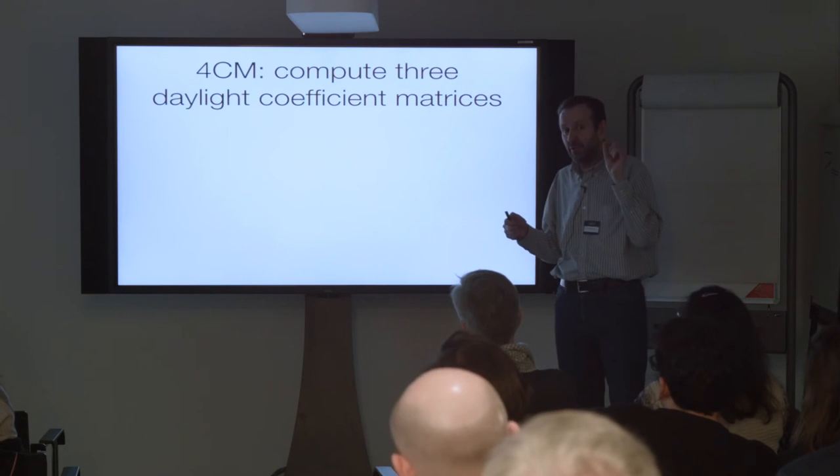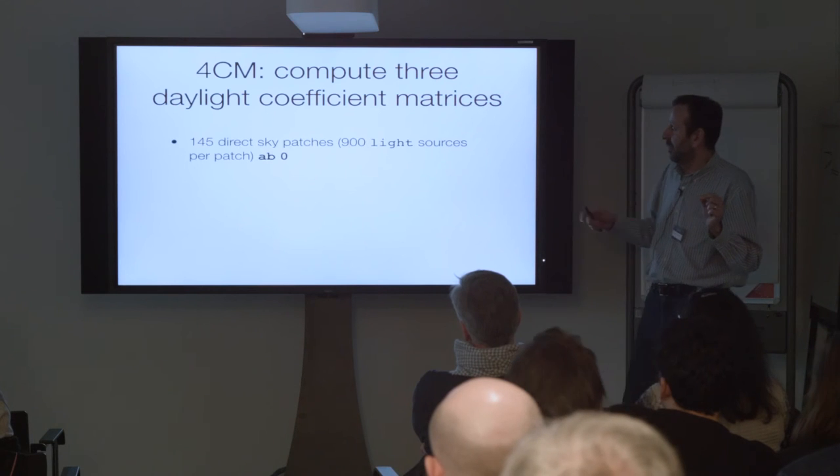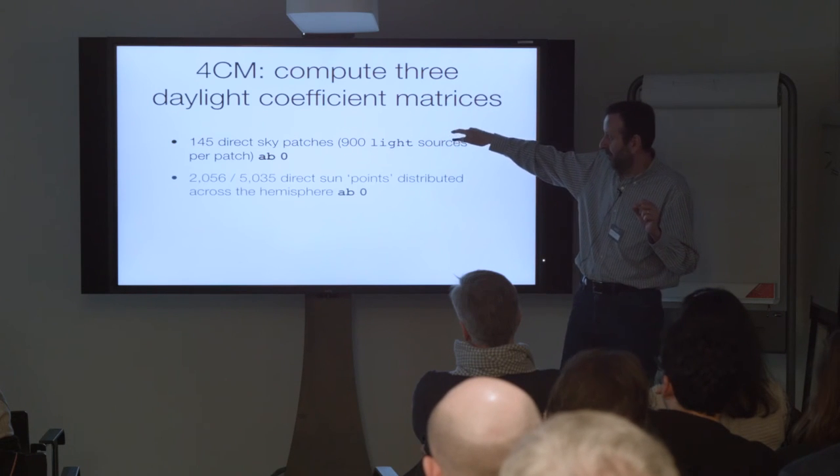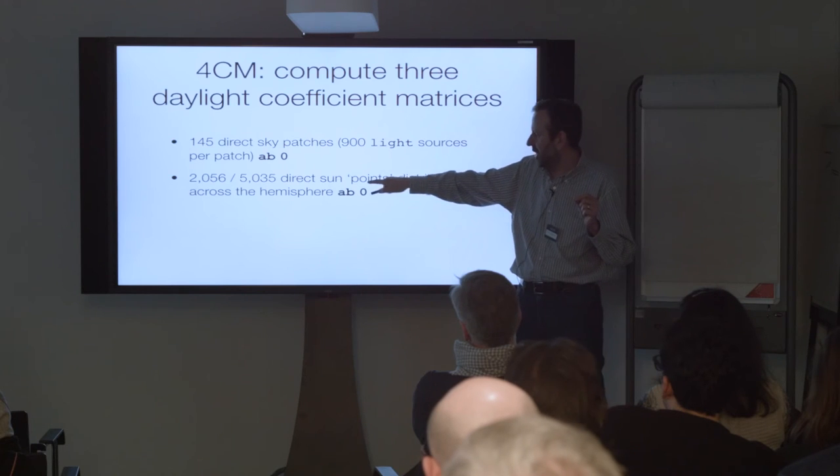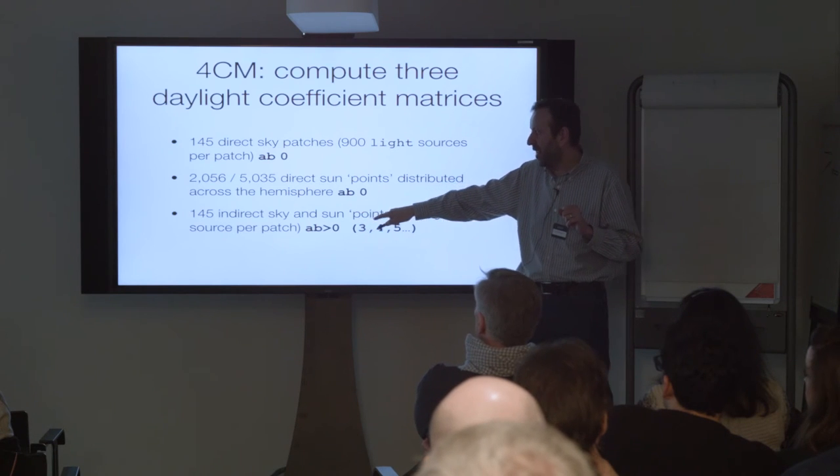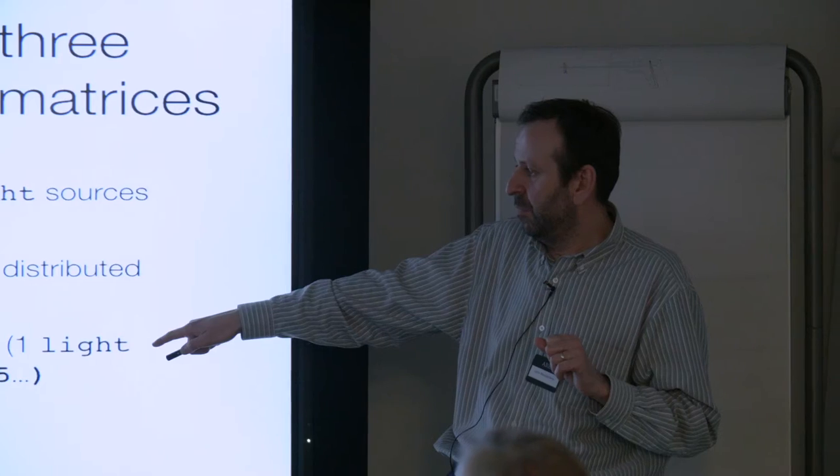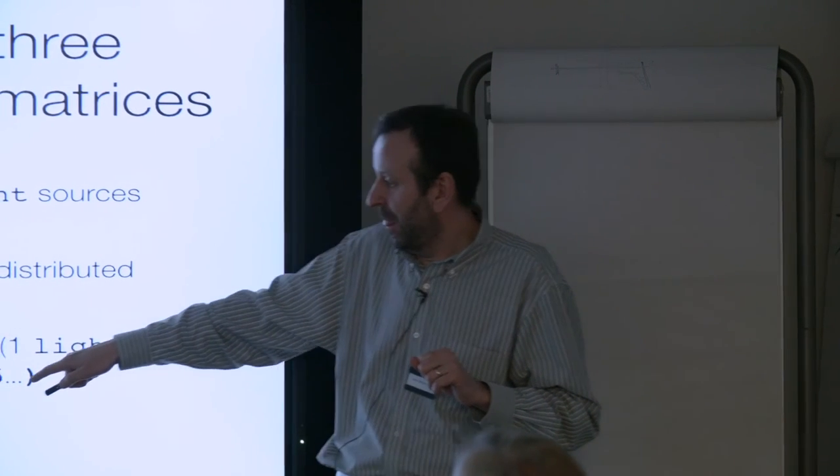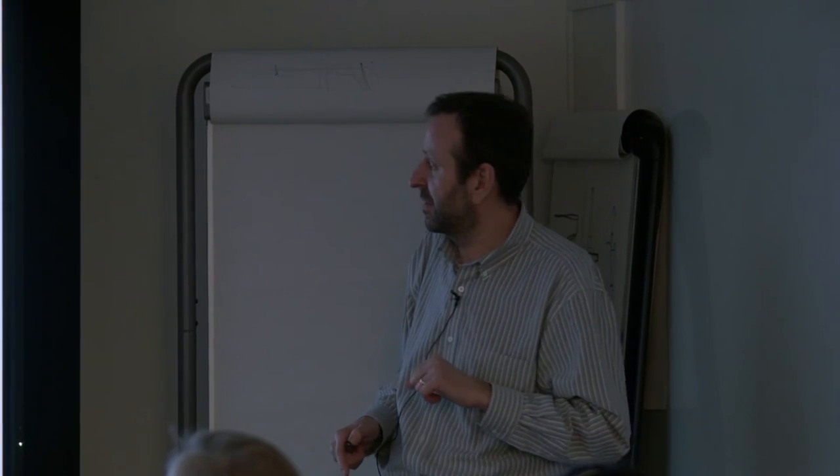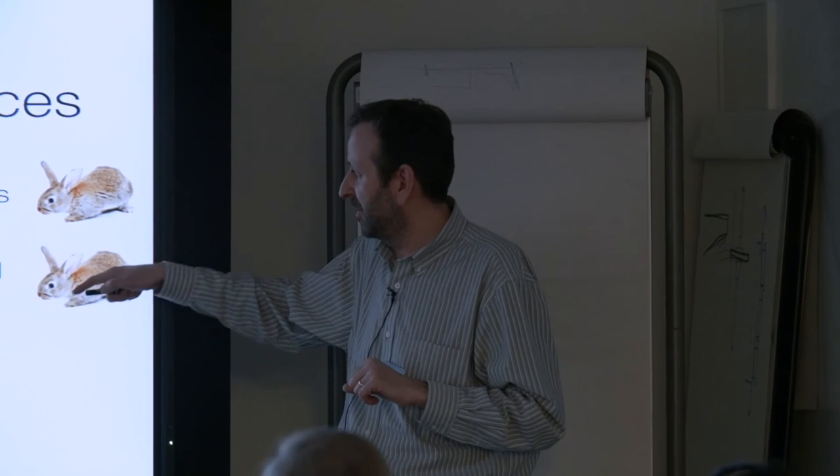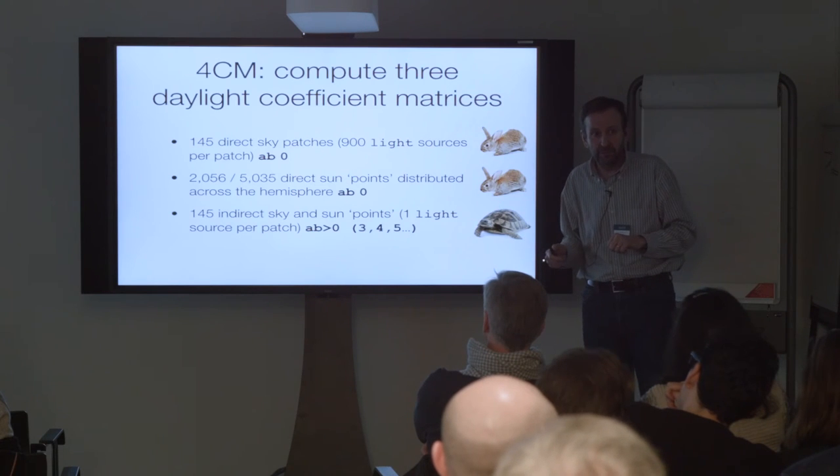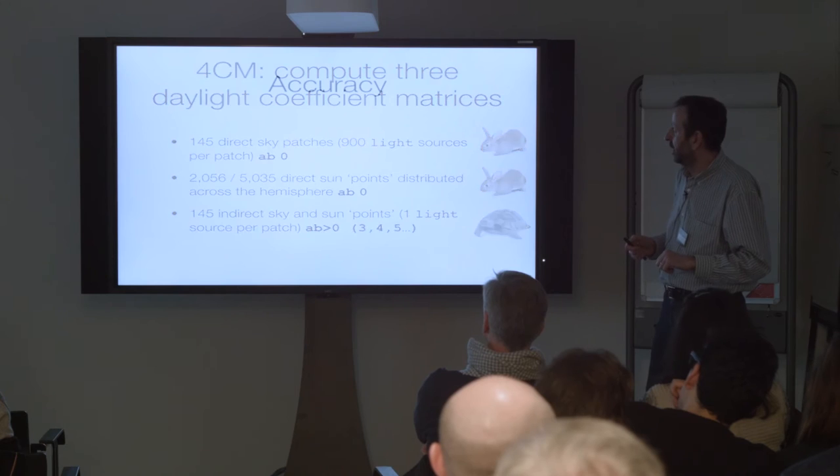The full component method: compute three daylight coefficient matrices, 145 direct sky patches with 900 light sources per patch, 2000 or 5000 direct sun points evenly distributed across the hemisphere with AB0, and then 145 indirect sky and we use that for indirect sun points with one light source per patch and AB whatever, I don't use anything less than five and I typically use AB7 ambient bounces 7 for that. Blindingly fast, this will be the same as 145 daylight factor calculations.